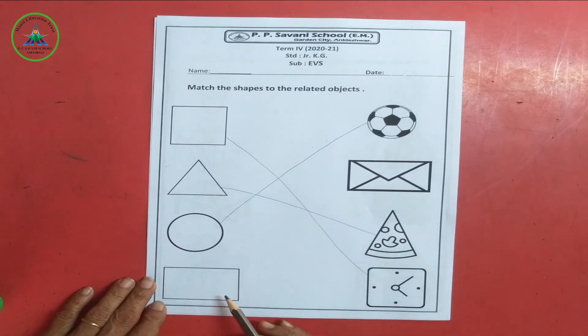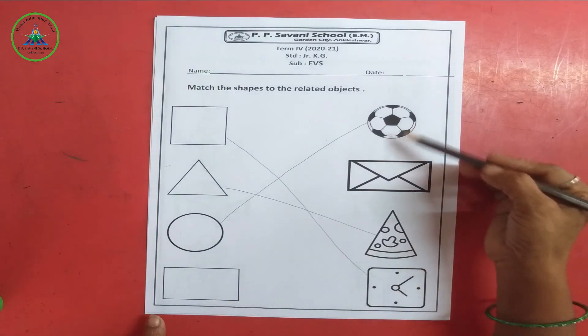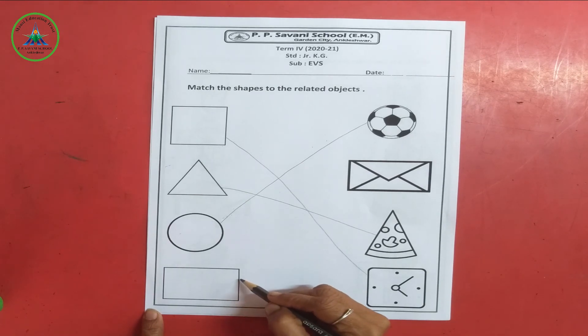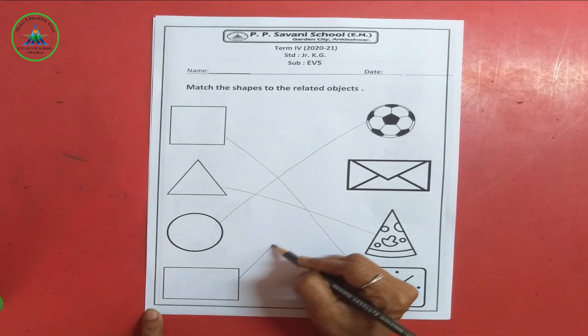And at last this is a rectangle. Then only one is there. Okay. This is the rectangle shape. And we will match and we will save it.